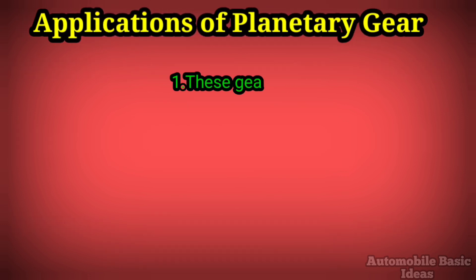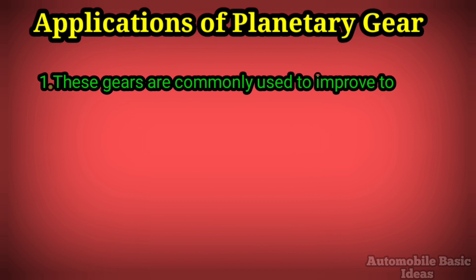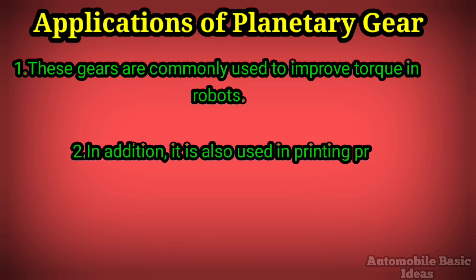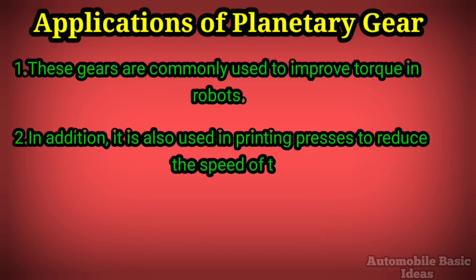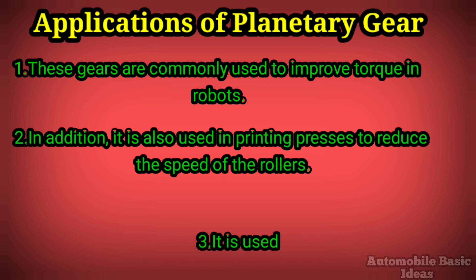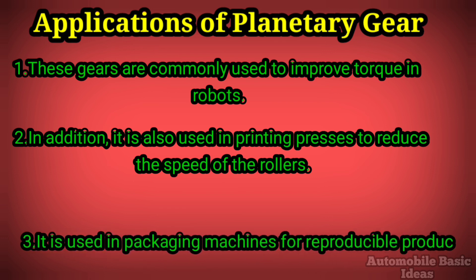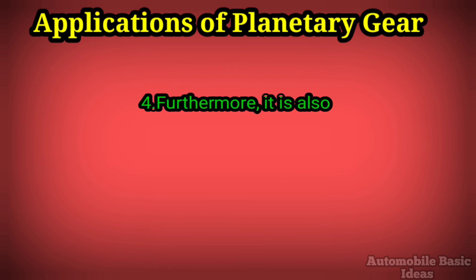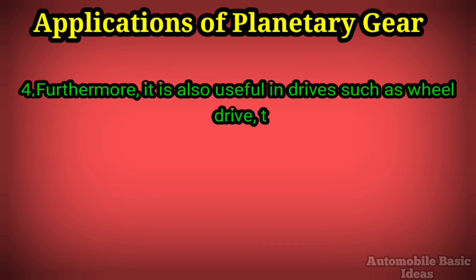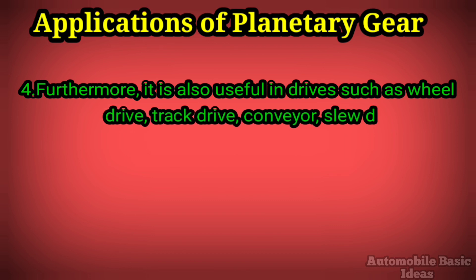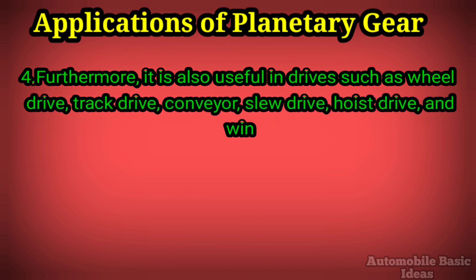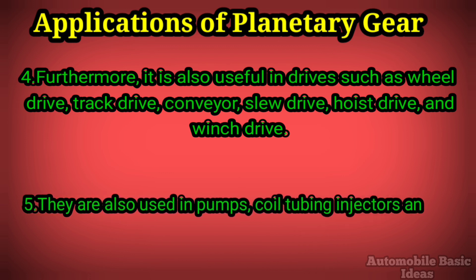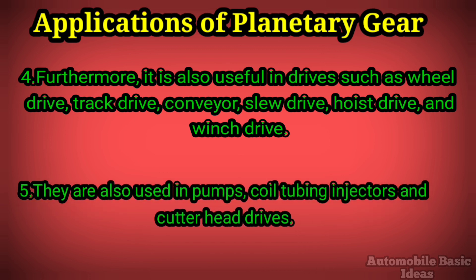Applications of planetary gear. One: these gears are commonly used to improve torque in robots. Two: they are also used in printing presses to reduce the speed of the rollers. Three: they are used in packaging machines for reproducible products in industries. Four: they are useful in drives such as wheel drive, track drive, conveyor, slew drive, hoist drive, and winch drive. Five: they are also used in pumps, coil tubing injectors, and cutter head drives.